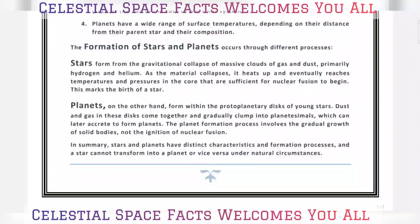The planet formation process involves the gradual growth of solid bodies, not the ignition of nuclear fusion. In summary, stars and planets have distinct characteristics and formation processes, and a star cannot transform into a planet — or vice versa — under natural circumstances.